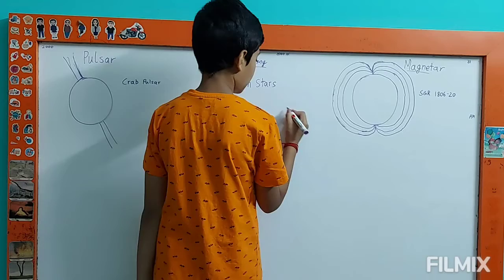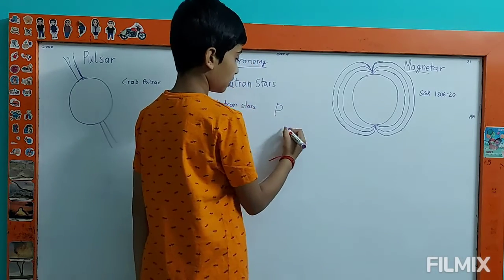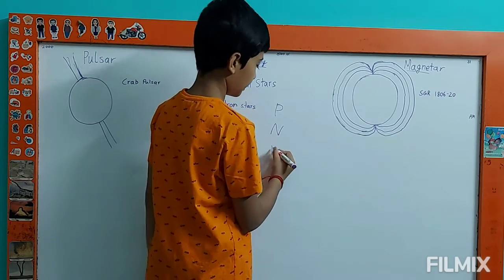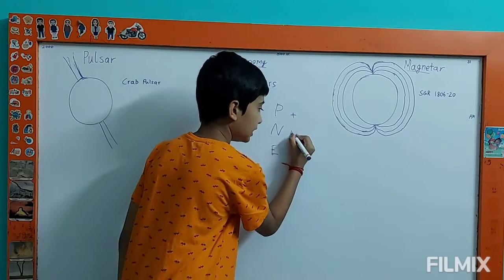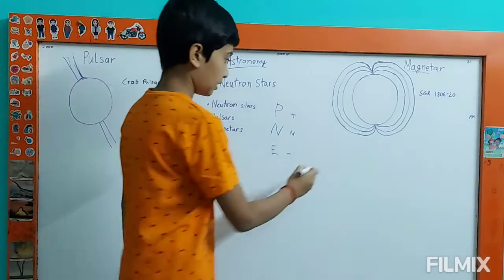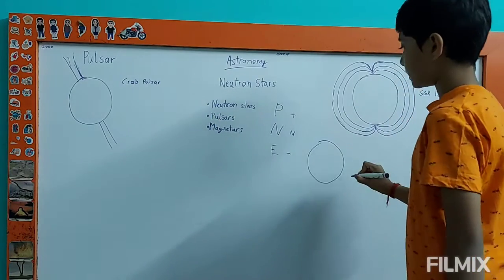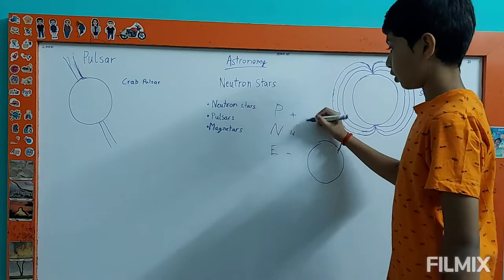All matter is composed of three particles: proton, neutron and electron, which have a positive, neutral and negative charge respectively. The iron core, due to the immense pressures, the protons and electrons fuse into neutrons.